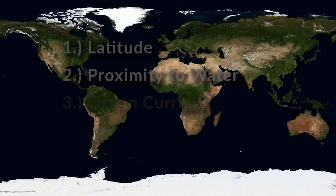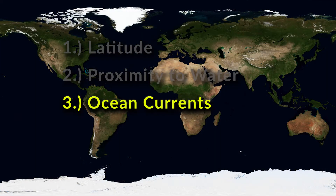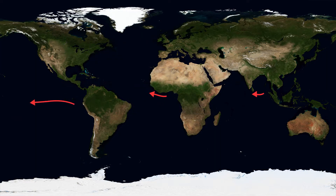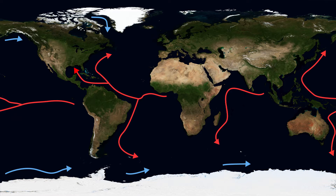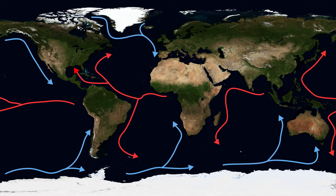Number three: ocean currents. Does ocean water circulate from the equator, allowing the air to have more water in it for us to experience storms? Or does ocean water circulate from the poles, causing the air to have less water in it to experience storms?